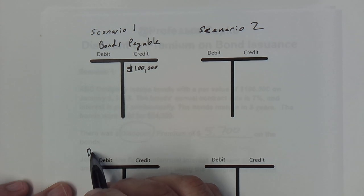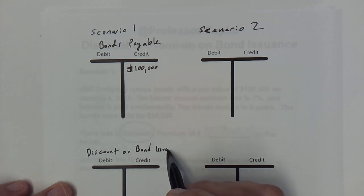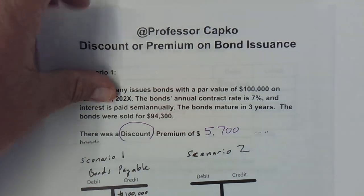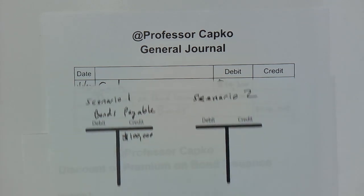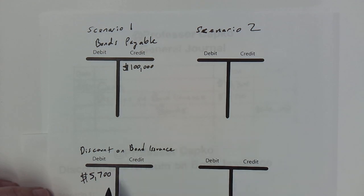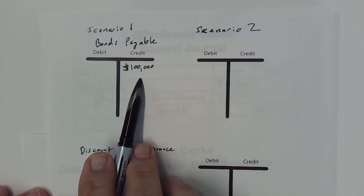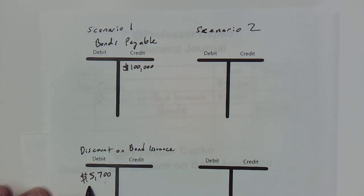Since we have a discount of $5,700, we have to record that in a separate account called discount on bond issuance. That $5,700 is recorded as a debit. This is a contra liability account — in other words, it offsets the liability. So we've got a liability credit of $100,000 and a debit to the contra liability account of discount on bond issuance of $5,700.